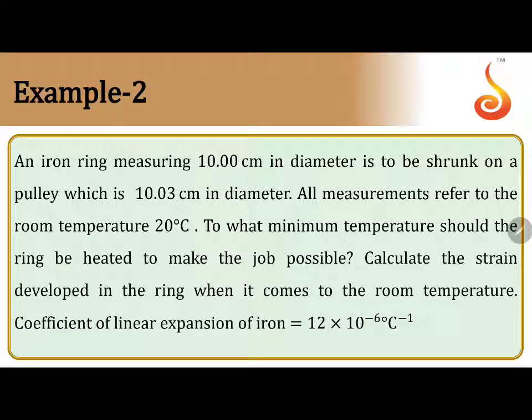An iron ring measuring 10 centimeters in diameter is to be shrunk on a pulley which has 10.03 centimeters in diameter. All measurements refer to the room temperature 20 degrees Celsius. To what minimum temperature should the ring be heated to make the job possible? Calculate the strain developed in the ring when it comes to the room temperature.